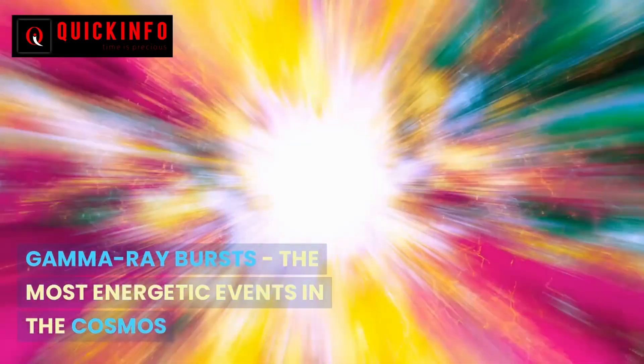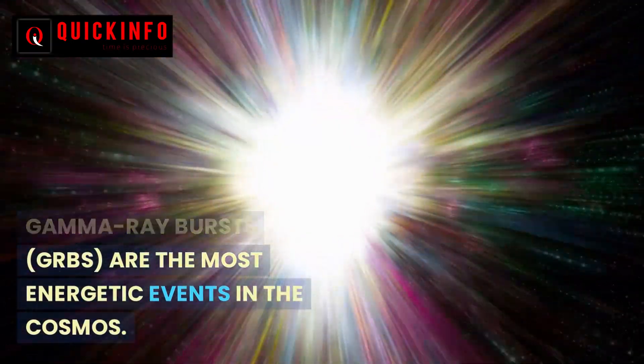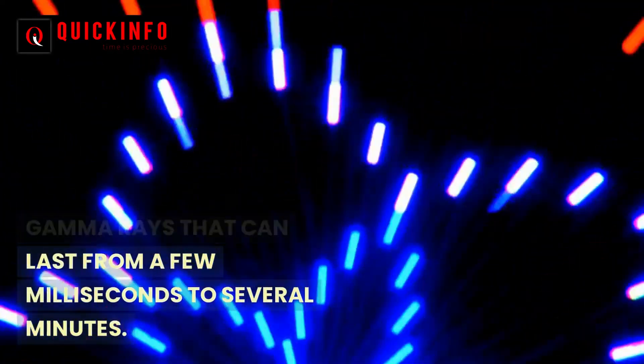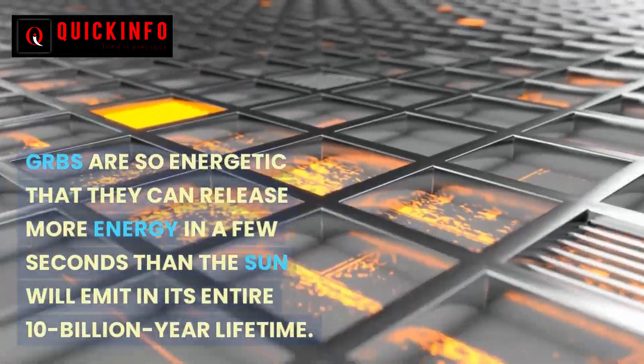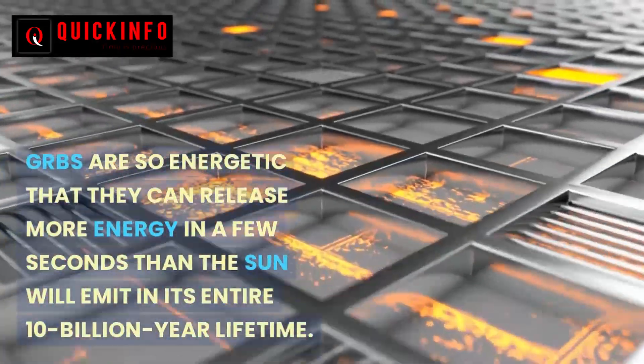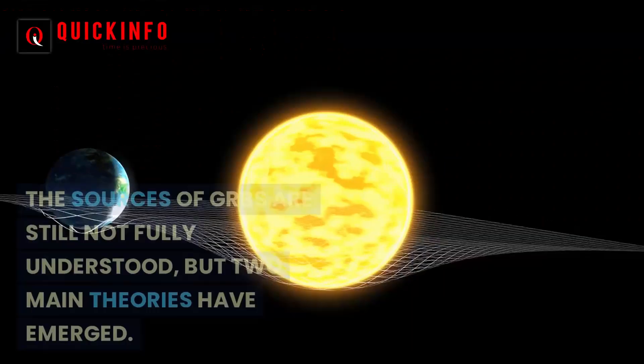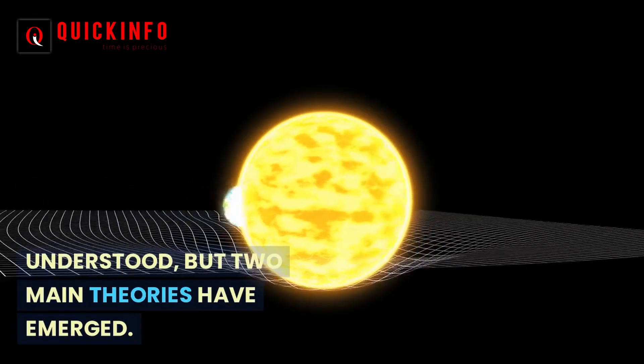Gamma ray bursts, or GRBs, are the most energetic events in the cosmos. They are brief flashes of gamma rays that can last from a few milliseconds to several minutes. GRBs are so energetic that they can release more energy in a few seconds than the sun will emit in its entire 10 billion year lifetime. The sources of GRBs are still not fully understood, but two main theories have emerged.